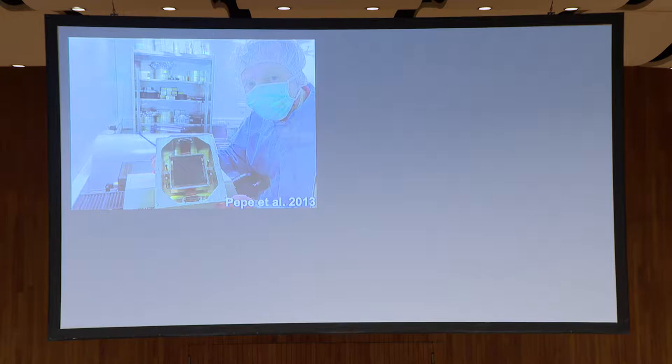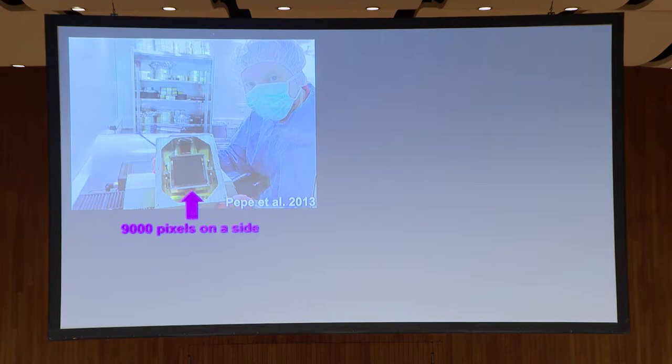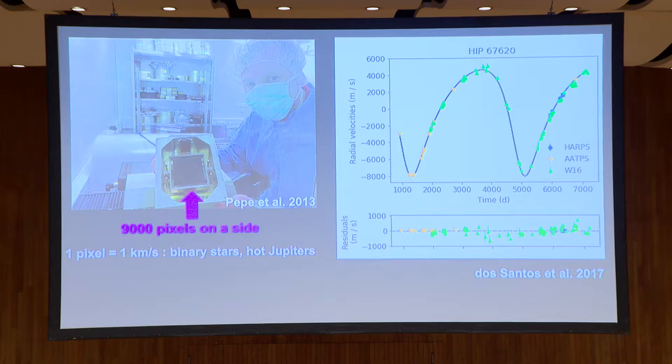This is the engineering grating for the ESPRESSO spectrograph, now in operation on the VLT. That is a CCD that is 9,000 pixels across. If you're trying to do radial velocity science, we're looking for these lines to shift in very, very small increments. A shift of one pixel gets you something like a kilometer per second in radial velocity. With a kilometer per second precision, you can measure things like binary stars or maybe some hot Jupiters — for example, HIP 67620, where the velocity is something like six kilometers per second.